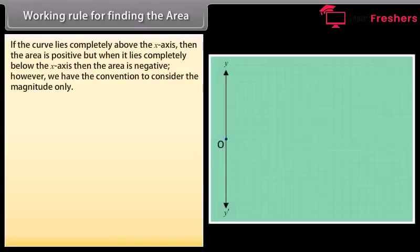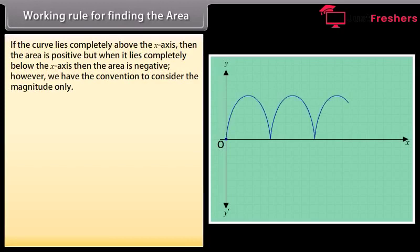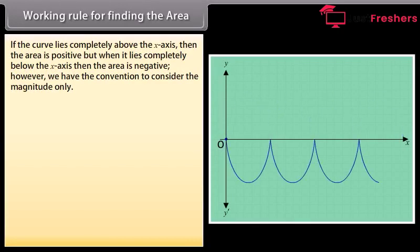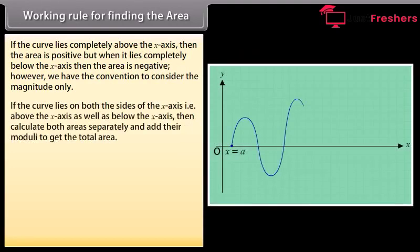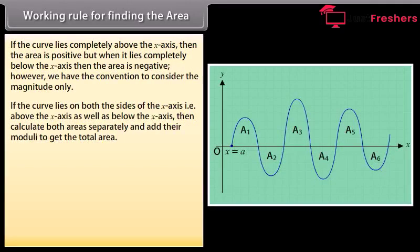If the curve lies completely above the x-axis, then the area is positive; but when it lies completely below the x-axis, then the area is negative. However, we have the convention to consider the magnitude only. If the curve lies on both sides of the x-axis — above as well as below — then calculate both areas separately and add their moduli to get the total area.